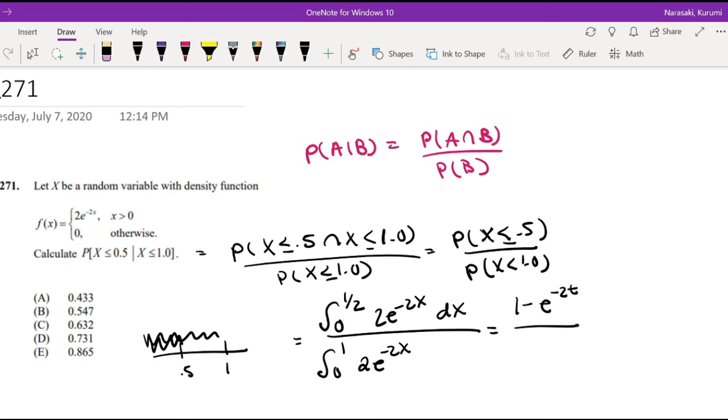Also then this will just be, I have to plug in my number 1 half, divided by 1 minus e to the negative 2 times 1.